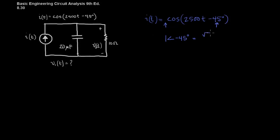So, square root of 2 over 2 minus the square root of 2 over 2 j. Okay, now we want to write our components into, convert our components into impedances. So, z of r is simply 10 ohms.